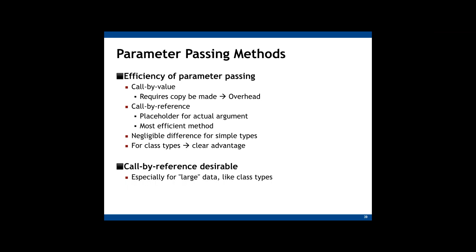We have already learned two different types of parameter passing methods: call by value and call by reference. We learned that a copy of the actual value of the argument is passed to the functions if we use call by value. On the other hand, only the address of the argument is passed to the functions if we use call by reference. So in which situation should we use call by value and call by reference?